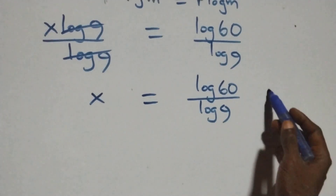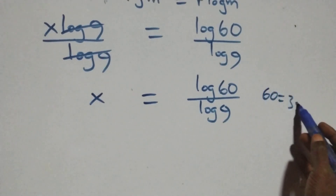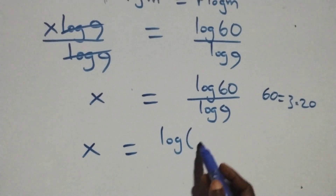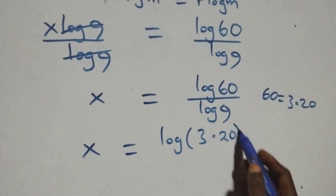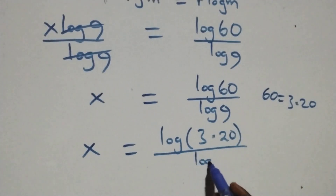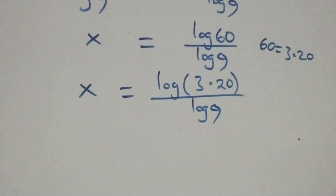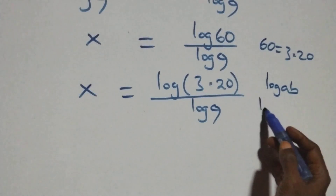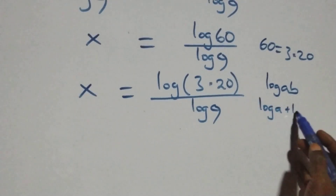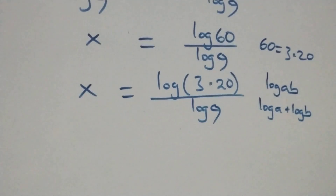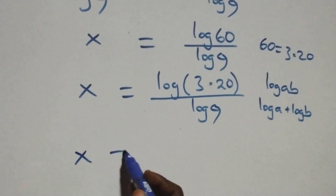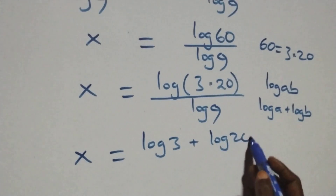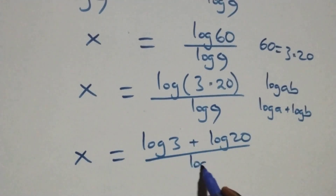From what we have here, we can write 60 as 3 times 20. So x equals log(3 times 20) divided by log 9. This follows the law of logarithms: log(a times b) is the same as log a plus log b. So we have x equals log 3 plus log 20, all divided by log 9.